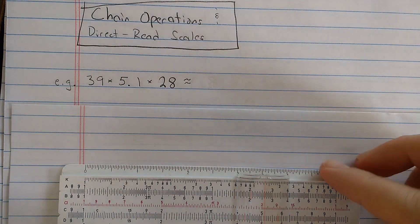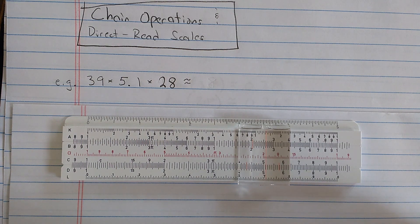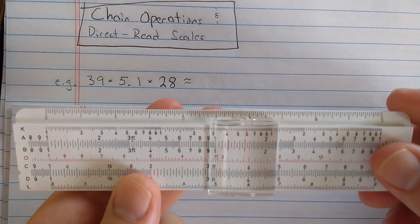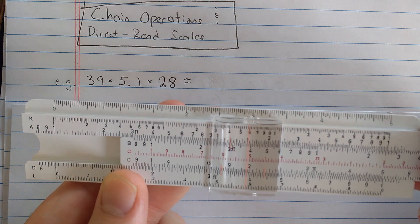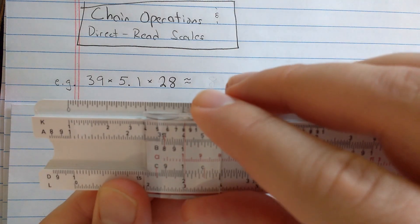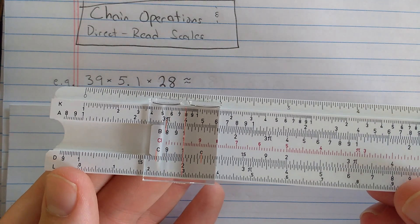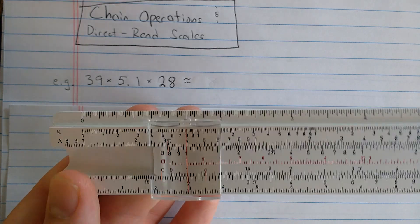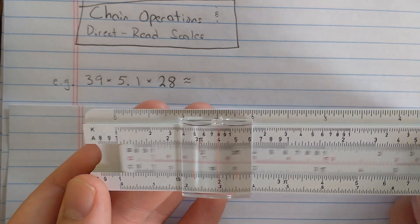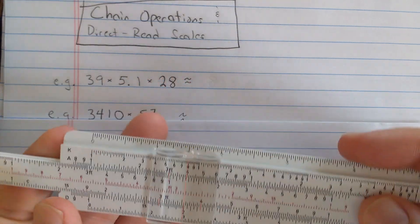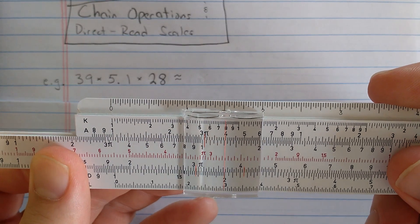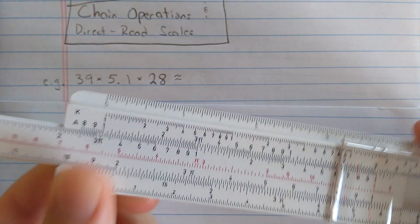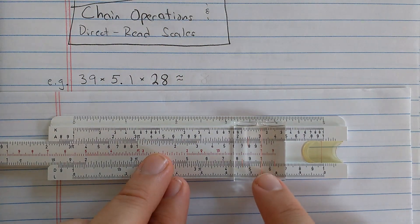Say I want to do a chain operation here. What I'll do is I'll first find the 3.9 on the D. Then to multiply again, I'll use my foolproof technique using the CI scale and find 5.1. Then I want to find the index. Now this intermediate result on the D scale, I'm just going to ignore. I'm not going to try to estimate. The cursor is now set at the intermediate step, and I will do a second multiplication. I'll just find on the CI scale the second number I want to multiply by, the 2.8, about there, and then move the cursor to the end.